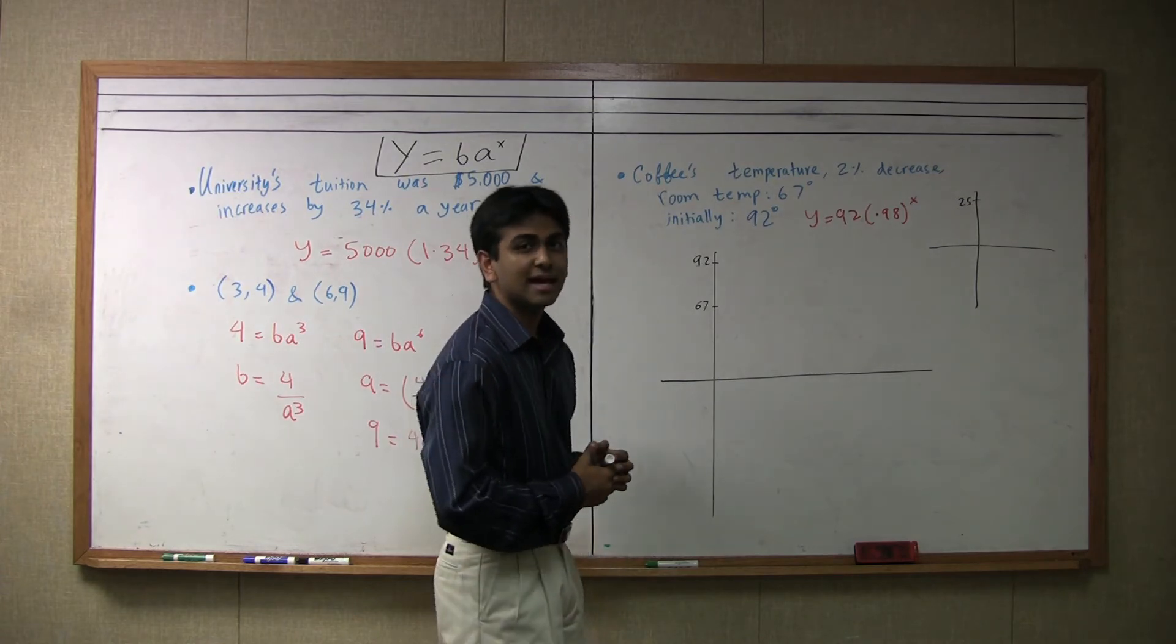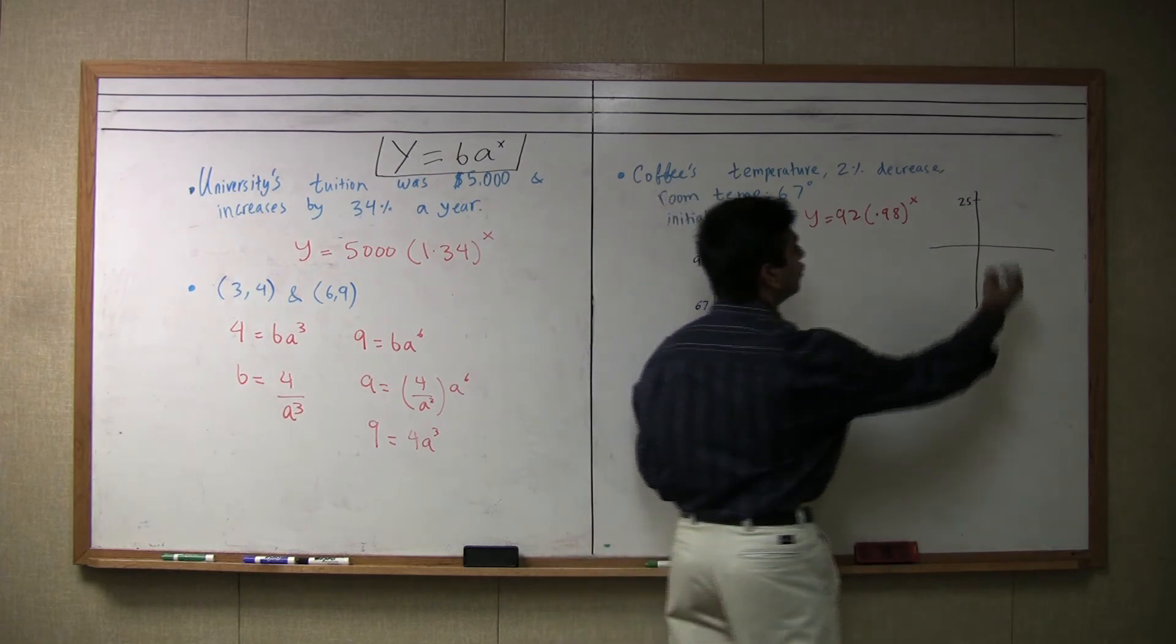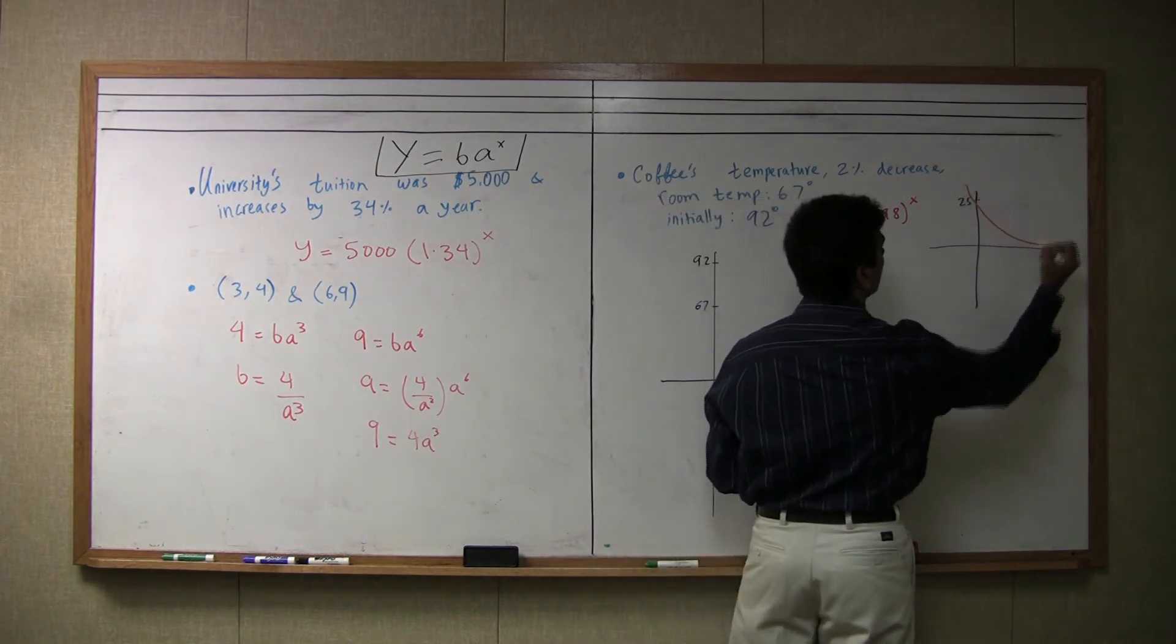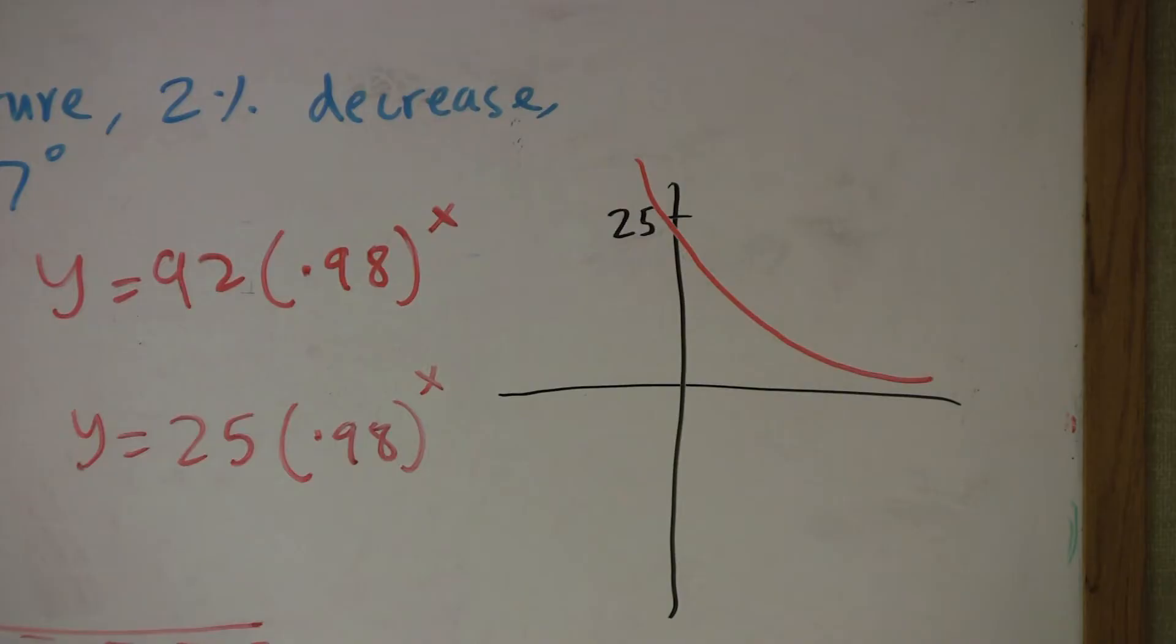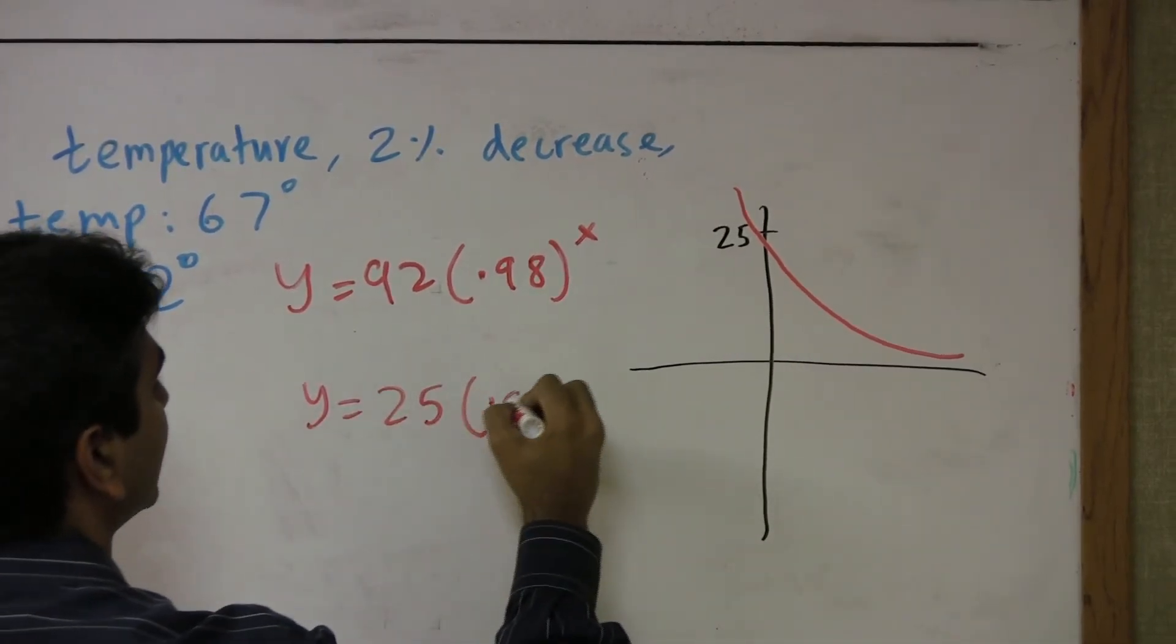Well, we notice that the temperature goes down by 25 degrees, from 92 to 67. We basically want our graph to look like that. So the equation for that would be y equals 25 times .98 to the x.